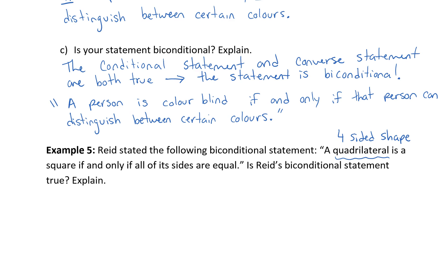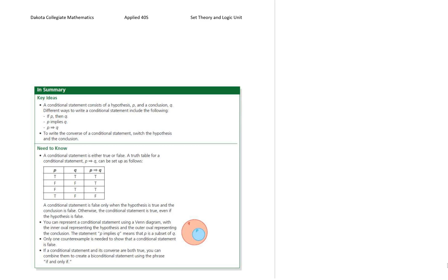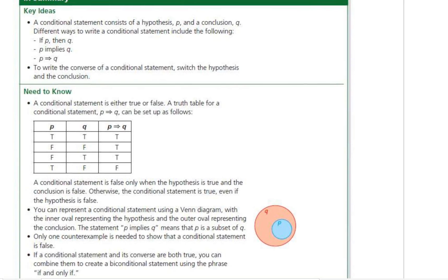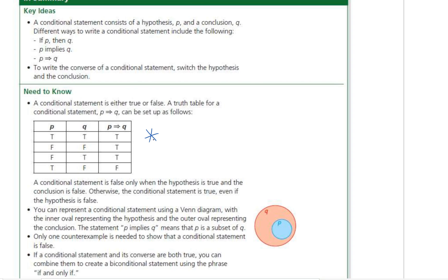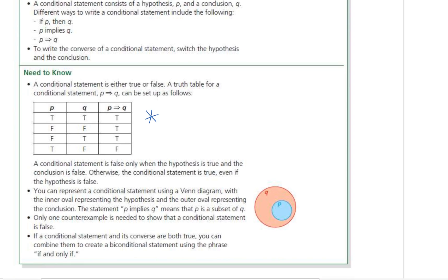Take a look at the last page of this section — just the key ideas. It's a nice summary. A conditional statement consists of a hypothesis and conclusion. Different ways to write the conditional statement include the truth table — this should go on your study sheet, as they do show up on exams quite often. Make sure you come and see me if you have any questions, and reminder to come in for extra help. Thanks for joining me, we'll see you next time.